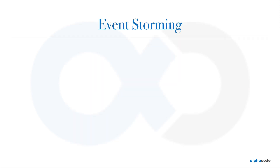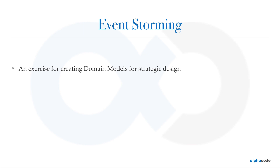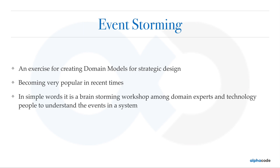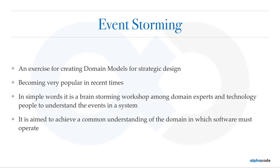If you want to fetch maximum information out of a domain expert and engage them to tell you more about the domain, those methods won't work. The answer is event storming. Event storming is an exercise for creating a domain model for strategic design. You have a domain, sub-domains, and then a domain model for each sub-domain. To create that domain model, you run an event storming session as a workshop where everyone participates. There's a facilitator who keeps the group focused, engaged, and guides them toward a complete model of the domain. In simple words, it is a brainstorming workshop among domain experts and technology experts - people who understand the events in a system - aimed to achieve a common understanding of the domain.